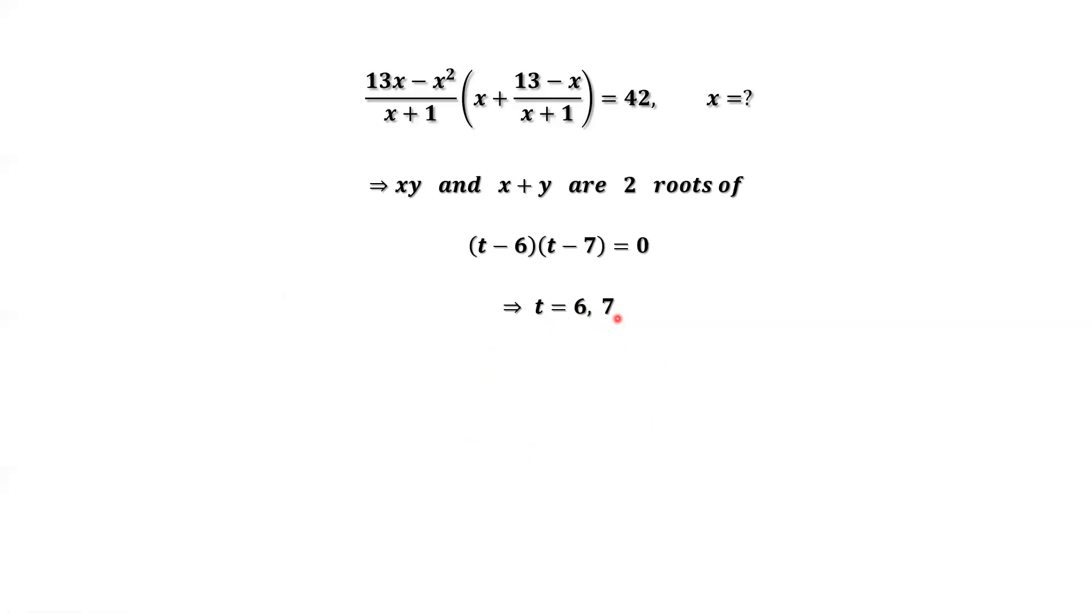What is t? x times y and x plus y are two roots. This implies we have two possible systems. x times y equals 6, x plus y equals 7. Or switch the order: x times y equals 7, x plus y equals 6.